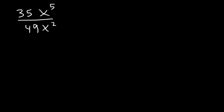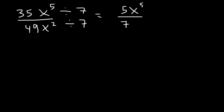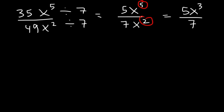We can reduce 35 and 49 by 7. 35 divided by 7 is 5, and 49 divided by 7 is 7. Whenever you divide by a common base, you're allowed to subtract the exponents. 5 minus 2 is 3. So the final answer for this problem is 5x cubed divided by 7.